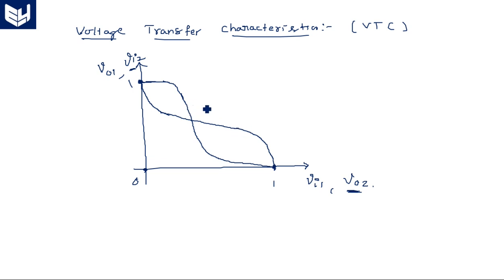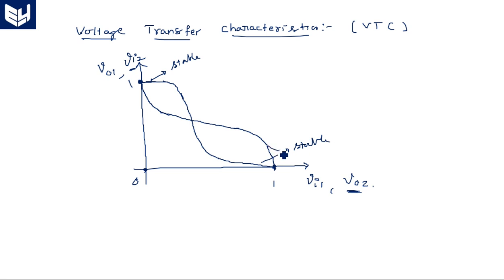These are the voltage transfer characteristics of both inverters superimposed — one in the conventional way, one in reverse order. The stable states are located at the intersection points at the ends of the curves. We can identify two stable states. The unstable state is at the middle meeting point, where there is no stability and the element is in a continuously changing process.